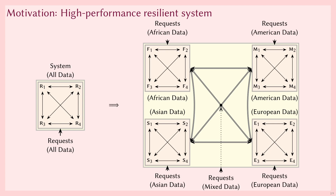We can, for example, break up all the data in our system into an African, an American, an Asian, and a European shard. By doing so, the African shard can process African requests, while at the same time the American shard can process American requests. Sharding does introduce complexity, however, as we need to coordinate between the shards to process multi-shard requests that affect data in several shards — for example, a request that transfers data from the African shard to the American shard.